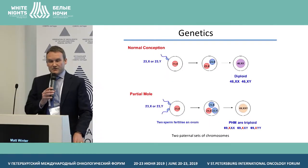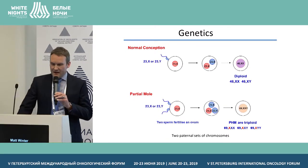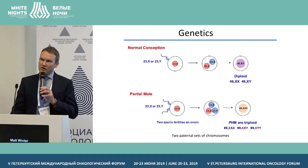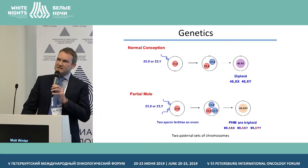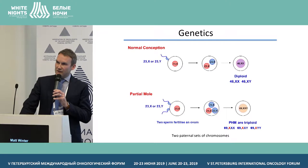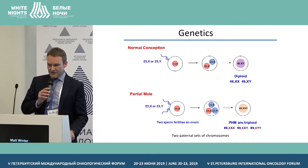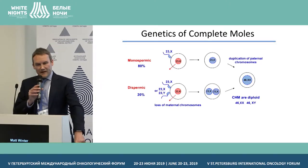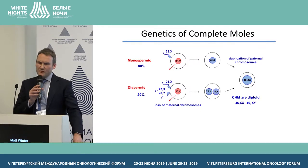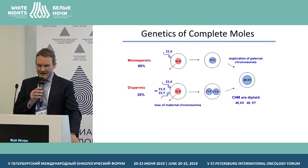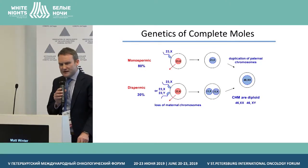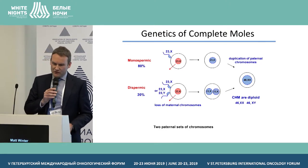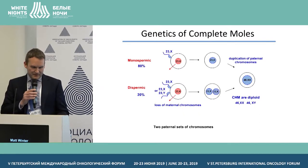A partial mole happens when an apparently normal ovum is fertilised by two sperm. These conceptions are triploid and have two sets of chromosomes from the father. Complete moles are different — they are diploid conceptions. This usually happens when an ovum without any maternal chromosomes is fertilised by a single sperm which then duplicates its DNA, and in 20% of cases this may be due to dispermic fertilisation rather than a single sperm. Complete moles are diploid conceptions with two sets of paternal chromosomes and no contribution from maternal DNA at all.